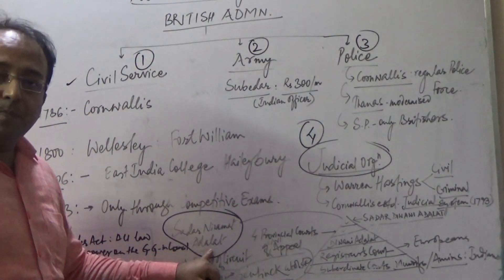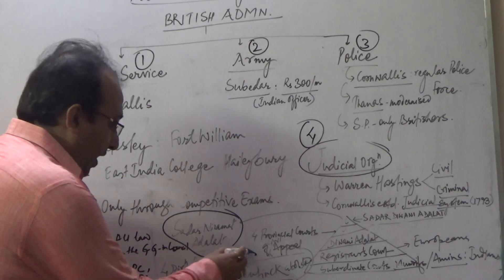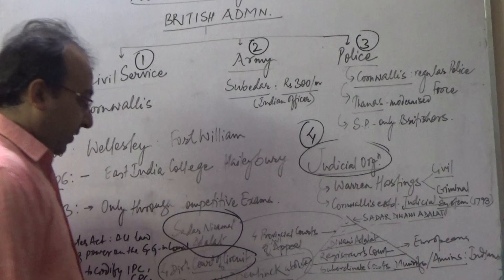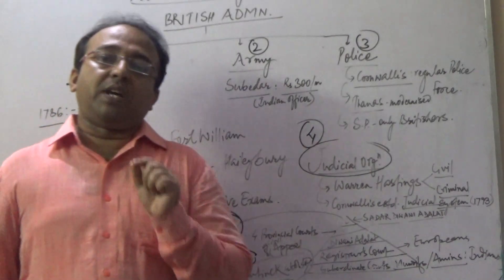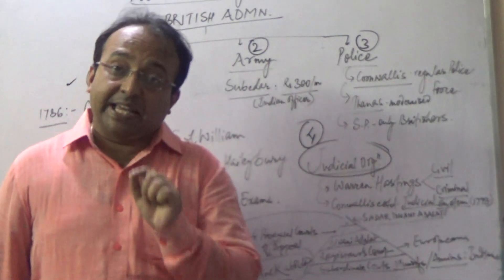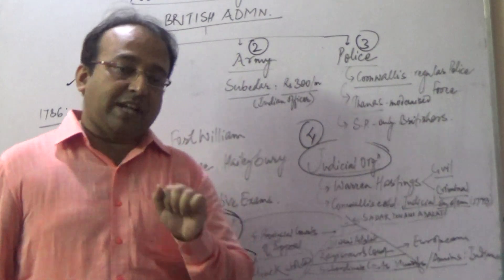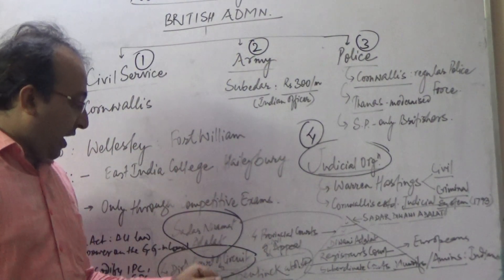Below this, there were four divisions of Court of Circuit. So four divisions of Court of Circuit were there, looking after the criminal cases in West Bengal, or in Bengal at that point of time.